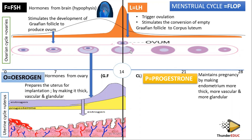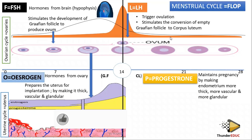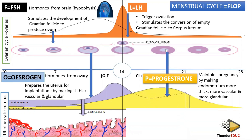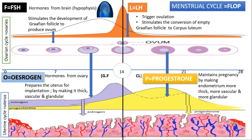The empty graafian follicle is changed to corpus luteum by the help of the luteinizing hormone. Now because its function is done, the luteinizing hormone decreases. The moment corpus luteum has been formed, corpus luteum starts to produce progesterone. Progesterone maintains pregnancy by making the endometrium more thicker, more vesicular, and more granular — with more blood vessels and more glands.